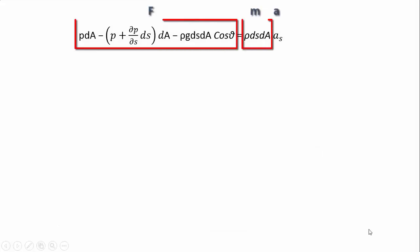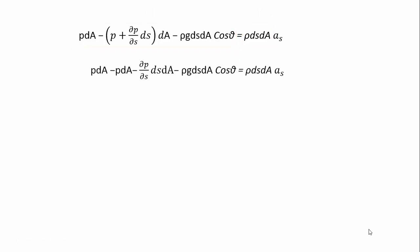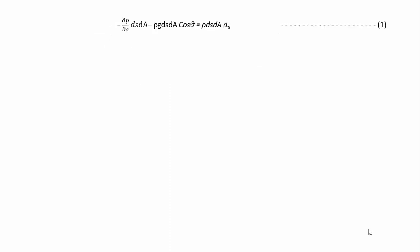If you substitute the expression for F in the equation of motion, take out the P dA in common and cancel it out, you will get this relation. Take this relation as equation 1.